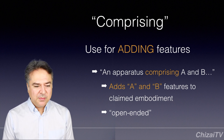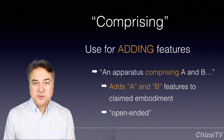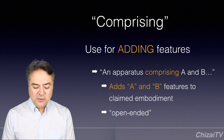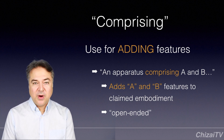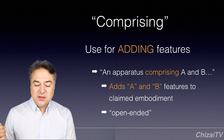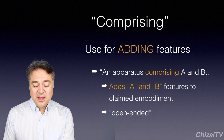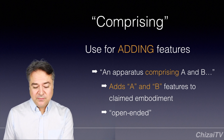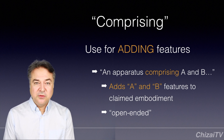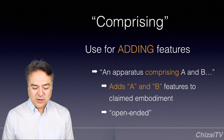For example, for infringement, if you have a claim comprising A and B, and the accused device — your competitor's device — has A, B, and C, because it has A and B, it still infringes on your claim. So, wherein.